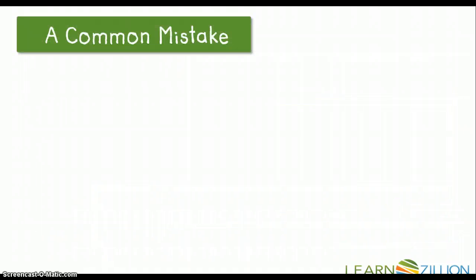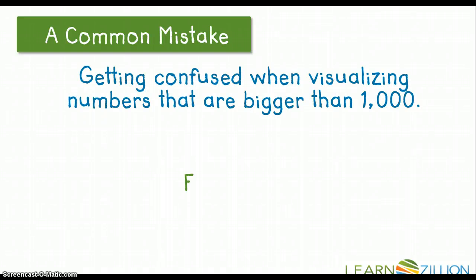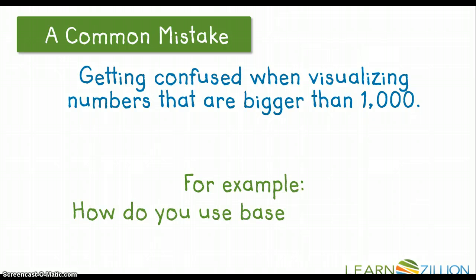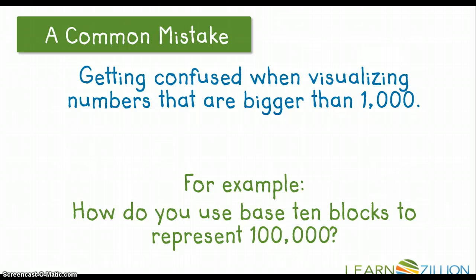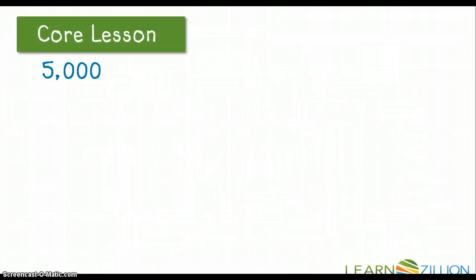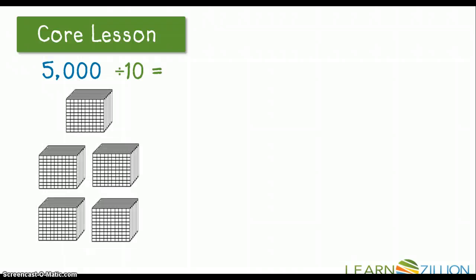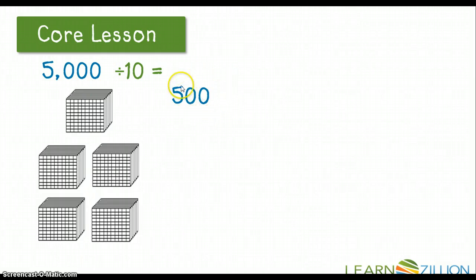A common mistake that many students make is getting confused when visualizing numbers bigger than 1,000. For example, how do you use base 10 blocks to represent 100,000? Let's take a look at the number 5,000. If we want to divide 5,000 by 10 to make that number 10 times smaller, we would get 500. Notice that when we divided 5,000 by 10, we took away one of the zeros and our number became 500.